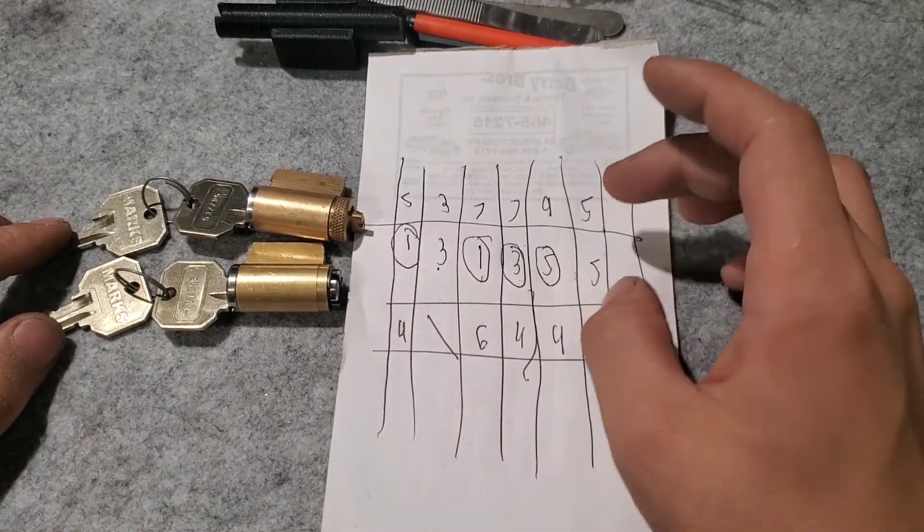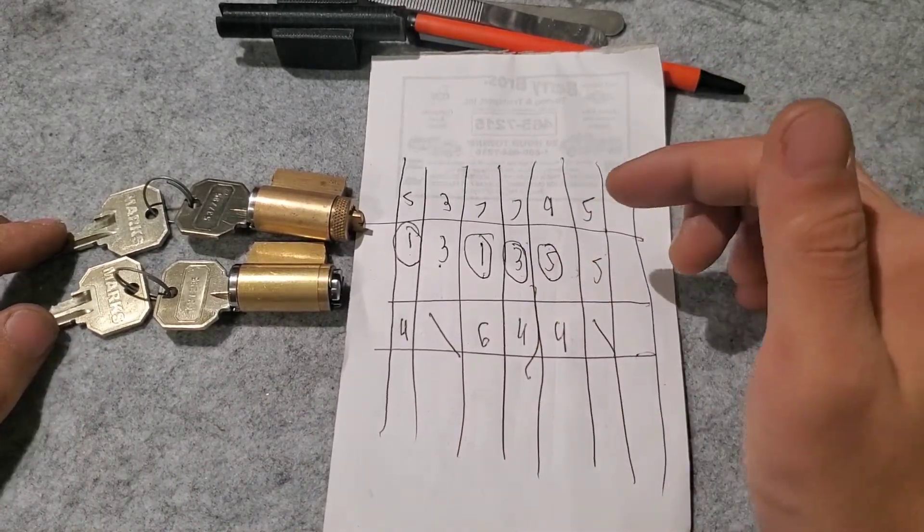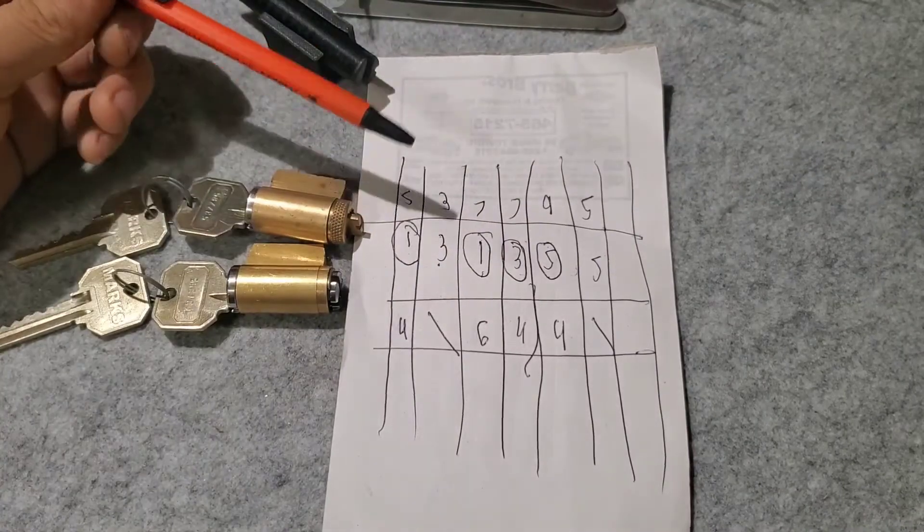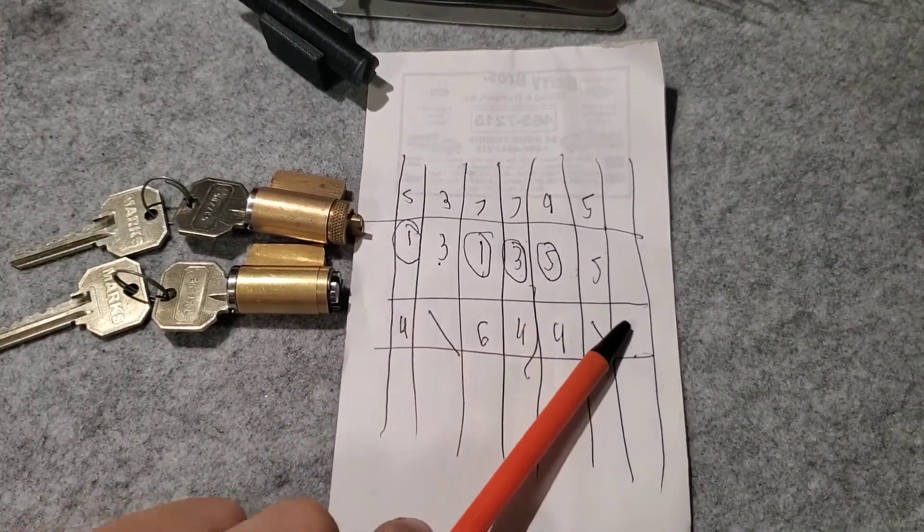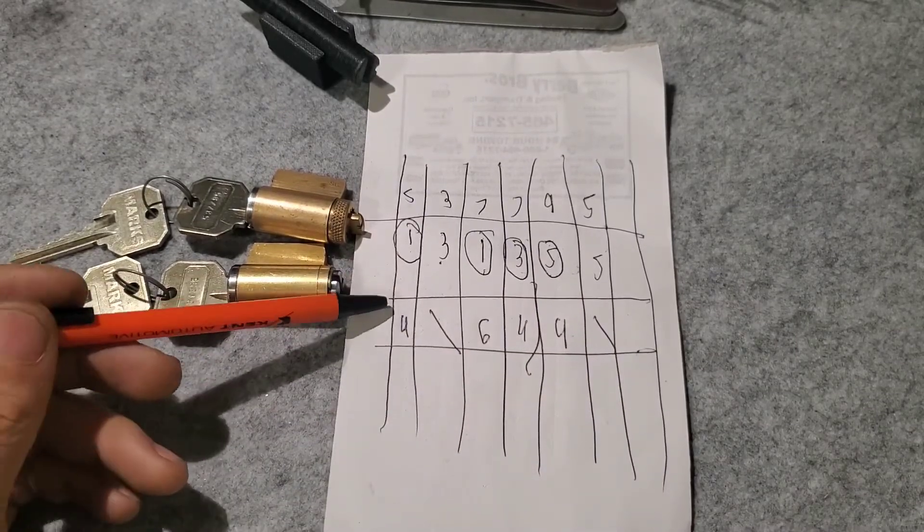Here we just have a change key and a master key. This is our change key, this is our master. Here's the bitting for both. The numbers circled are the lowest key pins and that's what we're going to put in our lock for master keying.